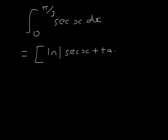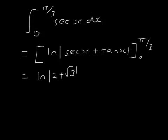And it becomes this. So that works out to be ln of 2 plus root 3, minus ln of 1 plus 0. ln of 1 plus 0 is 0, so that's ln(2 + √3).